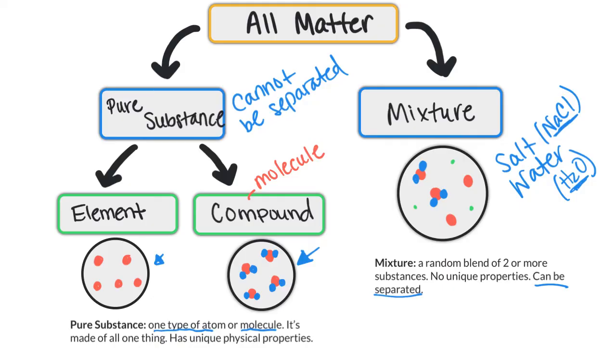So again, mixtures are a blend of different substances and can be separated. A pure substance can be like elements of all one type or compounds of all one type, and they cannot be separated.